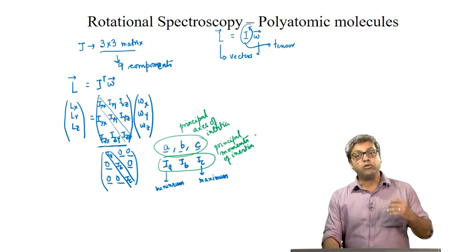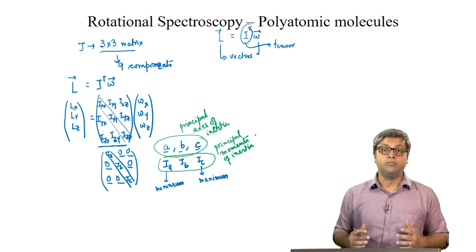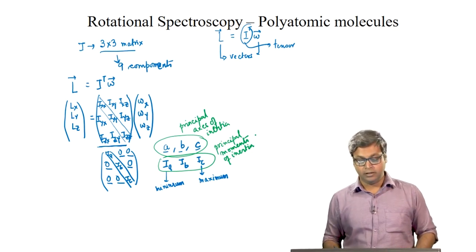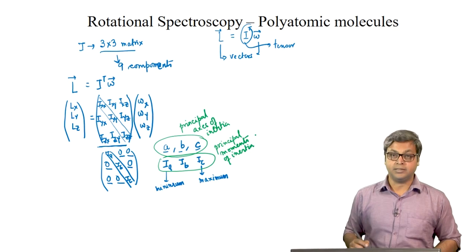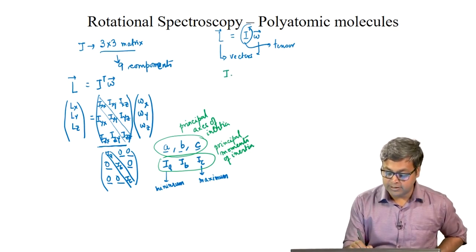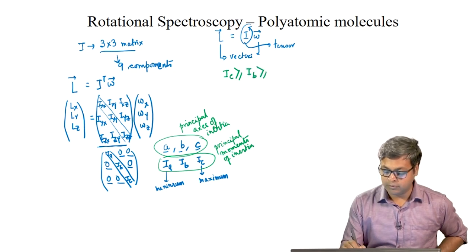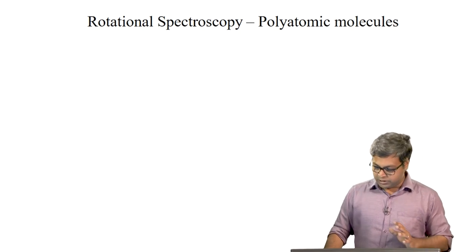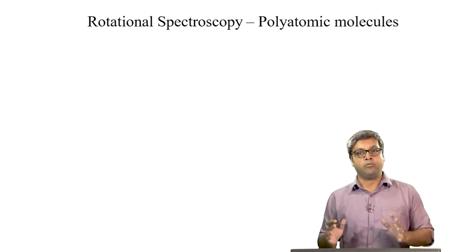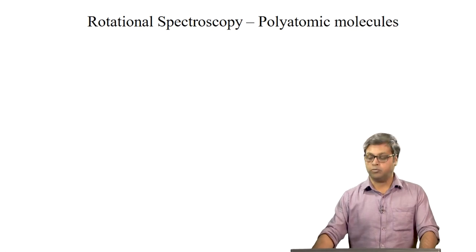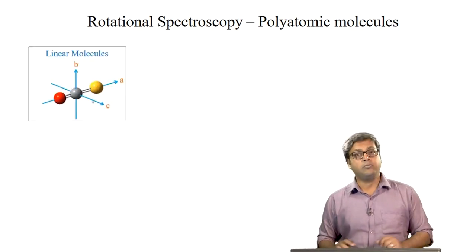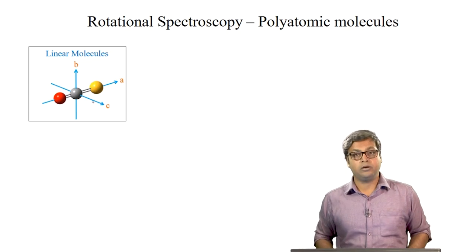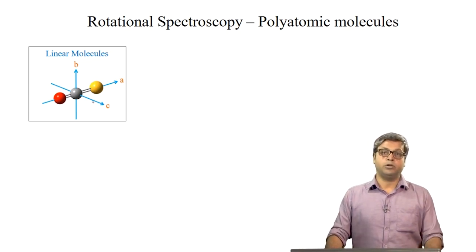Thus, any rotating body or molecule has 3 values of I — IA, IB, and IC — and we can write IC ≥ IB ≥ IA. Now we will start looking into polyatomic molecules, beginning with linear molecules — either diatomic or linear polyatomic molecules.